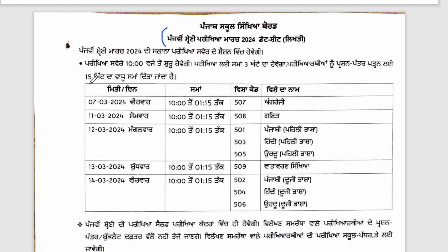The first paper is 7 March. If you can see the timing at 10, then the first paper will be English. The second paper is 11, then the second paper is 1 March. The third paper is 1 March, which is 12 March.